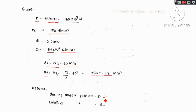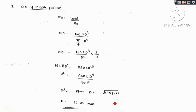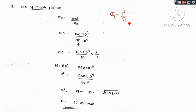To find the diameter of the middle portion, we use the stress formula: sigma 2 = P by A2. So 150 = P / A2, from which we solve for A2, and then find the diameter of the middle portion.